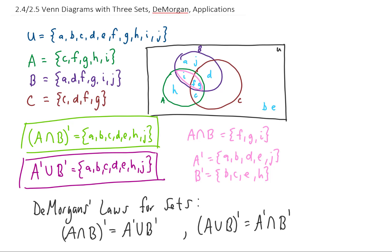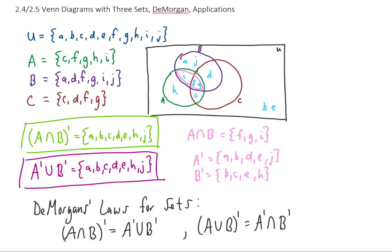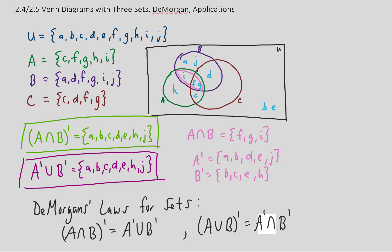As a device to remember these laws, we can think of the complement outside the parentheses as distributing to everything inside. If we distribute the complement to A, we get A complement. If we distribute it to the intersection sign, we get a union sign — flip that sign over. And if we distribute the complement to B, we get B complement. The same is true for the second law: complement distributes to A, union becomes intersection, and B becomes B complement.